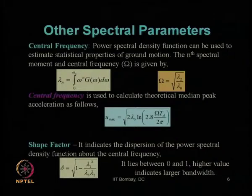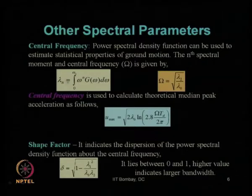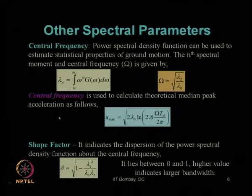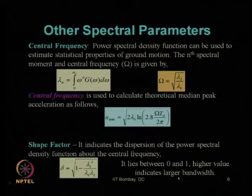Other spectral parameters discussed in the previous lecture include central frequency, estimated using the power spectral density function g(ω). The central frequency Ω is calculated in terms of λ₂ and λ₀, and is further used to calculate the theoretical median peak acceleration. The shape factor indicates the dispersion of the PSD about its central frequency — it lies between 0 and 1, with values close to 1 indicating larger bandwidth.